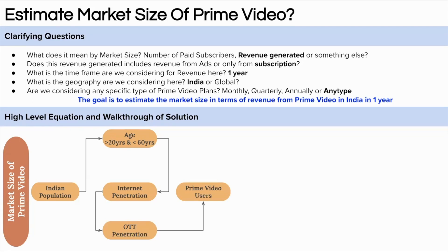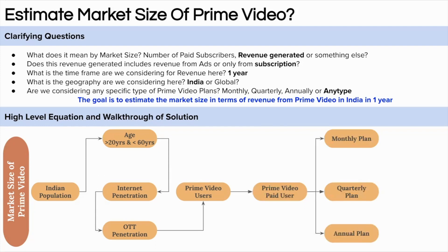So far we have all users who watch Amazon Prime Video, but they may or may not be paid users. In India, people share Amazon Prime accounts, so we need to calculate the paid users specifically. Once we have the paid users, we further drill down into their subscription plan — bifurcating them into monthly, quarterly, and annual plans. After that, we sum it all up to get the total annual subscription revenue for Amazon Prime in India.